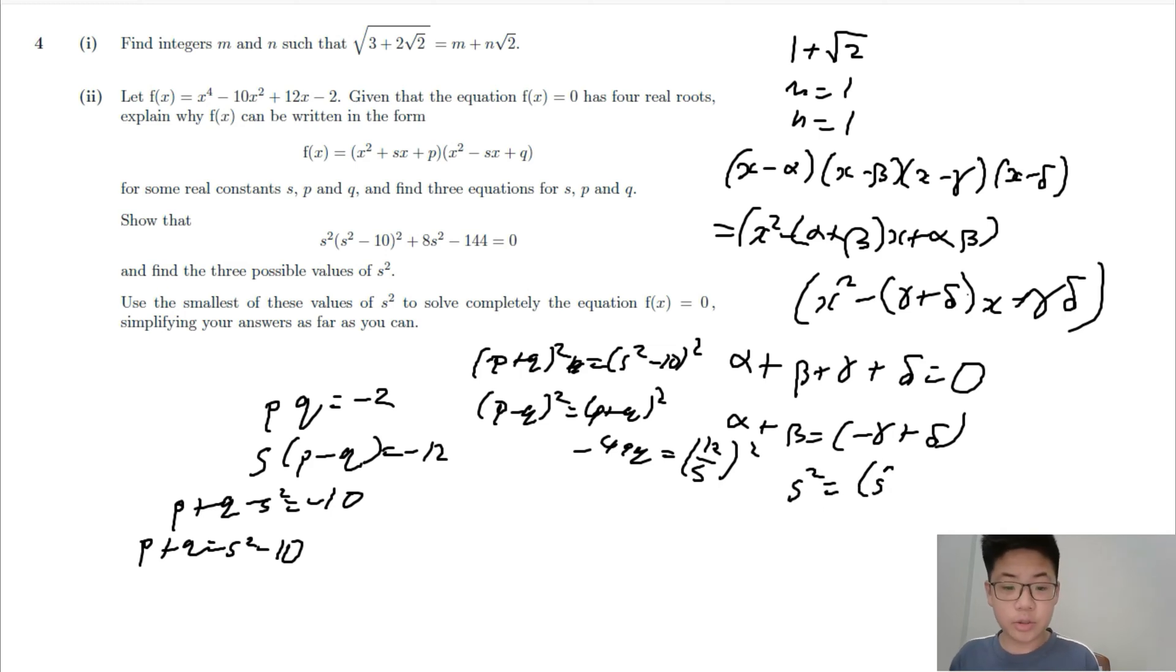To get an equation in s only, s² equals (s² - 10)² plus 8s² - 144 equals 0. And this only has real roots.